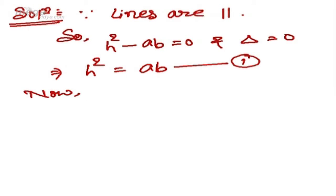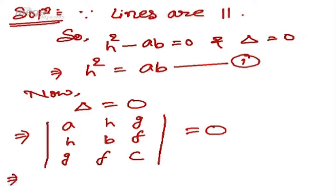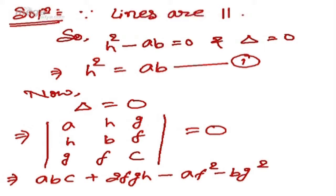Now we will use delta = 0. The determinant with entries a, h, g / h, b, f / g, f, c equals 0. Expanding it gives: abc + 2fgh - af² - bg² - ch² = 0. Since h² = ab, we will substitute from the first condition into this equation.